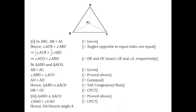It is given in the question that in triangle ABC, AB is equal to AC. So if AB is equal to AC, angle ACB will be equal to angle ABC, because the angles opposite to equal sides are equal. So we have written that angle ACB will be equal to angle ABC. If these two angles are equal to one another, their halves will also be equal according to Euclid's axiom. So in the third line, half of ACB will be equal to half of angle ABC.